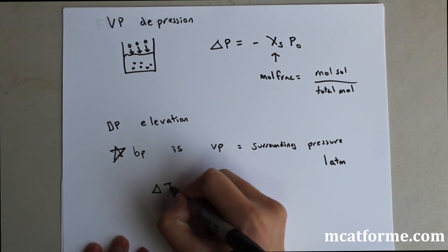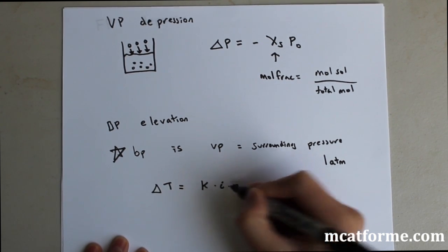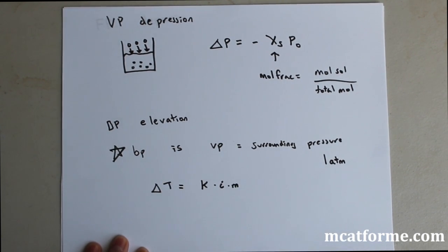Now on to the actual equation of boiling point elevation. It's going to be delta T equals kim. This is a pretty easy one to remember, just kim. We'll see that freezing point depression is the same equation but opposite. Delta T is obviously the change in temperature. We know there's no negative sign, so it's going to be an elevation, always an increase.